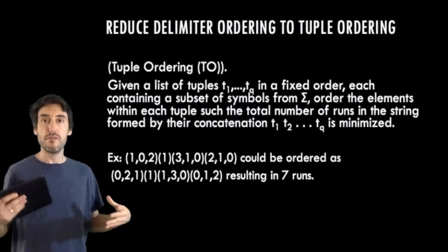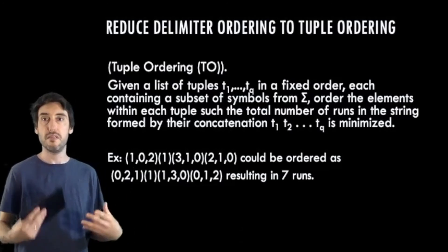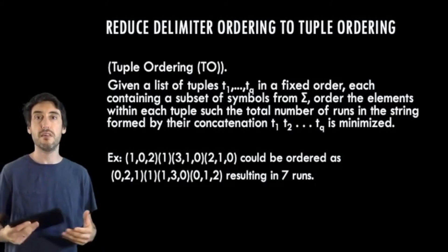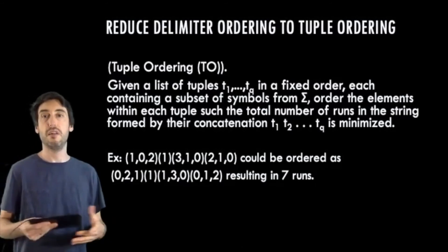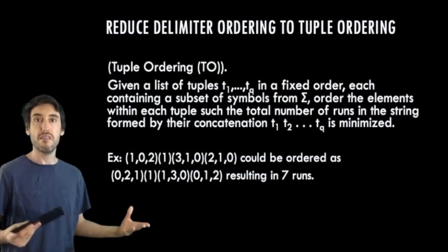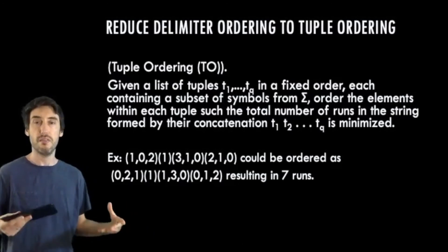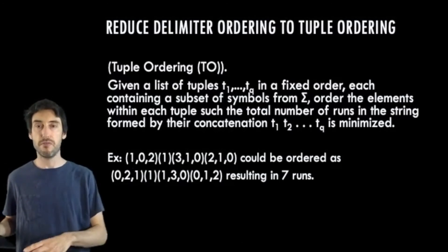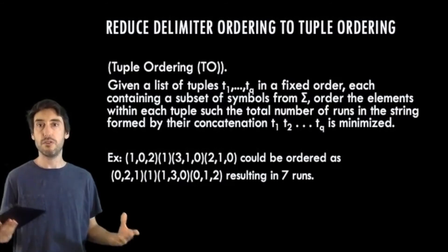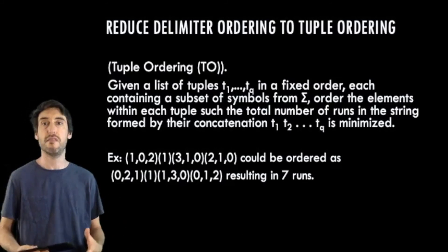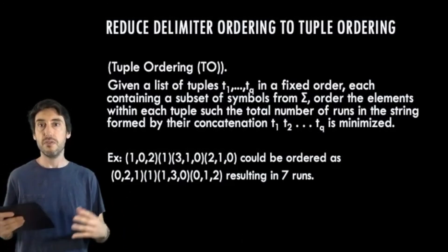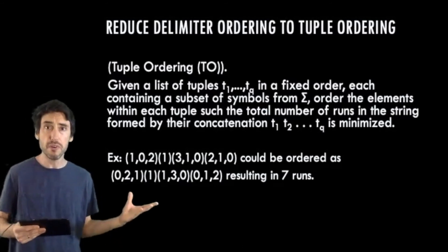So we will use some reductions again here to solve this problem, or at least to make it easier to conceptualize. So our first step is to use the shared context for symbols to group them together into subsets. Or rather, because we care about the order of the elements, to group them together into tuples. So this can be easily done in linear time. And then the problem becomes what we call tuple ordering. That is, we're given a set of tuples, t1 through tq, in a fixed order, each containing a subset of symbols from our alphabet. We want to order the elements within each tuple, so that the total number of runs in the string formed by the tuple's concatenation is minimized.